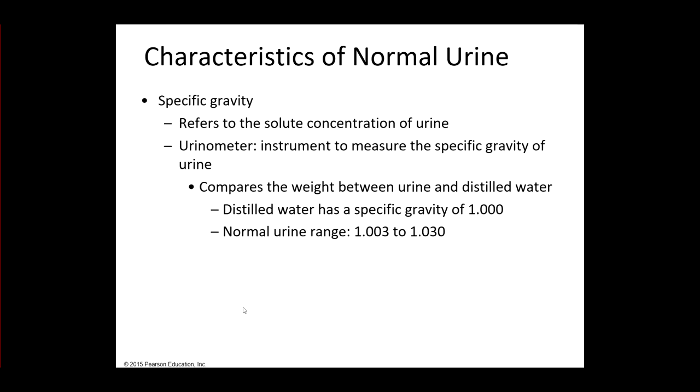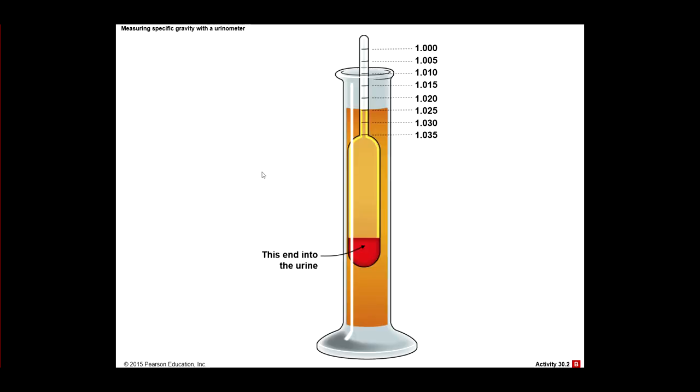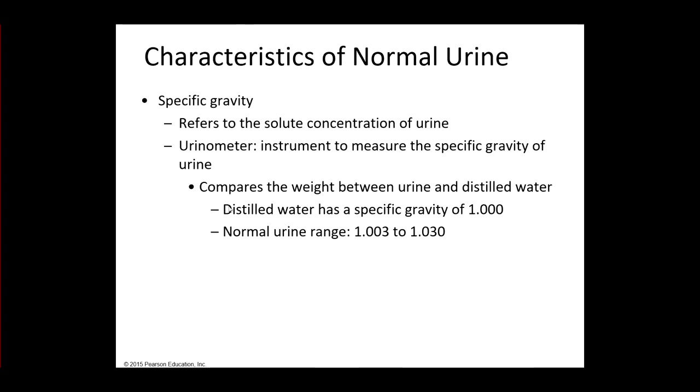So one of the things we can measure is something known as the specific gravity. And basically this tells us how much solutes are in the urine. So this is the solute concentration of urine. The instrument that we use is known as a urinometer. So this is something that you can do in the lab. And you can measure how concentrated the urine is. As an example, it kind of compares or will compare distilled water, which is pure water with no solutes in it, theoretically. That has a specific gravity of 1. So we kind of use that as the reference range.